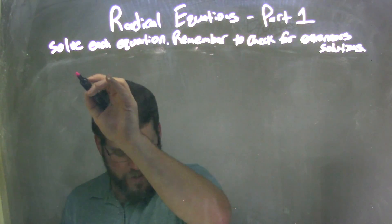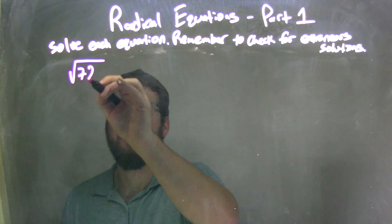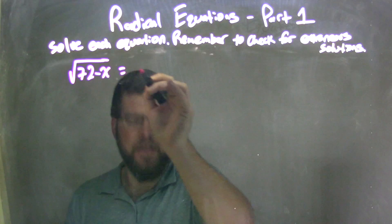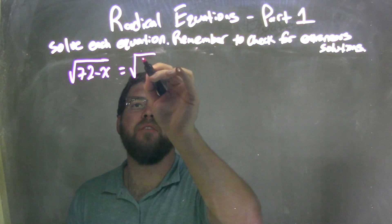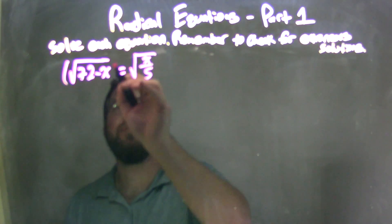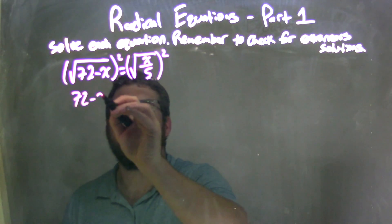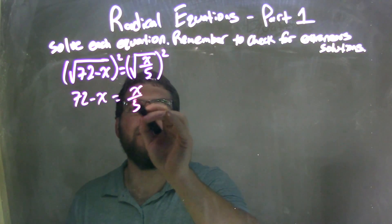So, if I was given this equation here, square root of 72 minus x equals square root of x over 5. Well, to eliminate the square roots from both sides, I'm squaring both sides, leaving me with 72 minus x on the left and x over 5 on the right.